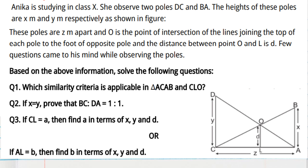Now for question 2: if X equals Y is given — in the figure it is not the same, but in the question it is given that X equals Y — we shall prove that BC to DA is 1 is to 1. Here BC means this length BC, and DA means this length DA.